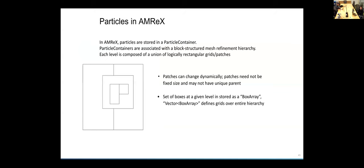In AMRx, particles are stored in an object called a particle container. Particle containers are associated with this block-structured mesh refinement hierarchy. I have a cartoon one shown there on the left, but here I have three levels, and each one is this union of boxes. In general, these can change dynamically. And Weichan has already described our box array class, and then a vector of box arrays defines the grids at every level of refinement.